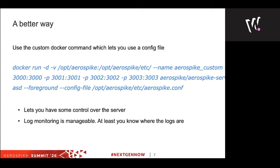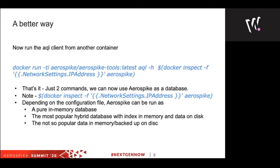Now we have a Docker container running and we need a client. There is a Docker image — our Aerospike tools image — which exposes all our tools. AQL is our command line tool, which you can use to connect to a database and do basic operations. This AQL tool runs on top of our C client. Using this you can do all the operations on the database. With just two Docker commands, you now have a full-fledged Aerospike installation running that is in your control — you can configure it the way you want.